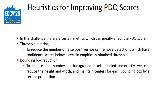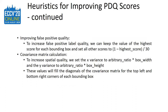In this challenge, there are certain metrics we found that can affect the PDQ score. We will dive into some of the implementation details for each heuristic applied to produce our results. First is threshold filtering: to reduce the number of false positives, we can remove detections which have confidence scores below a certain empirically obtained threshold. The second is bounding box reduction: to reduce the number of background pixels labeled incorrectly, we can reduce the height and width while maintaining centers for each bounding box by a certain proportion.